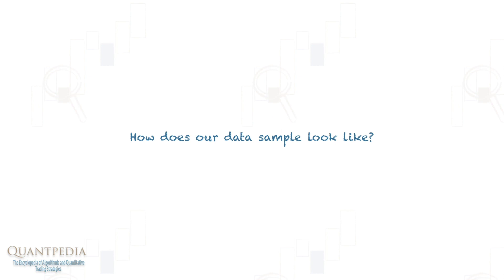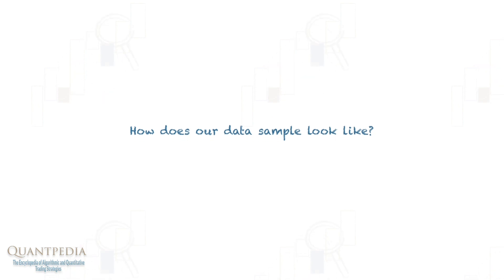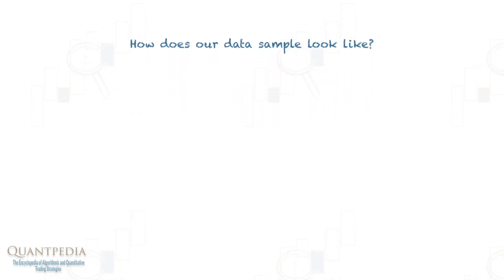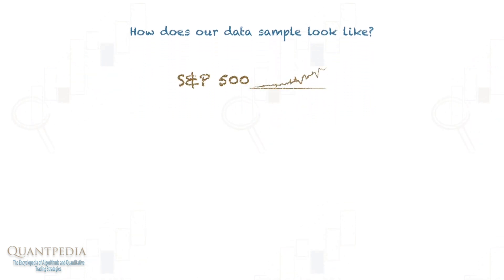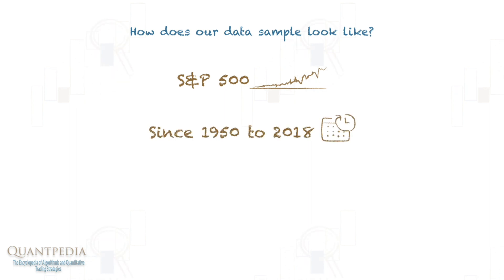How does our data sample look like? We selected a database of the S&P 500 index in the range from 1950 to 2018, in which an election day occurs only 35 times. However, it's enough to perform and show the conclusion for our analysis.